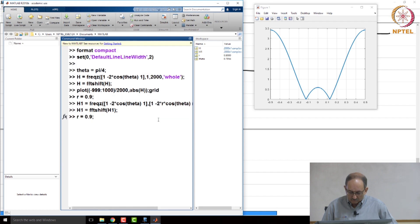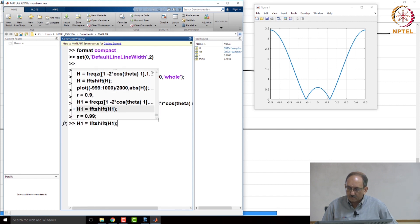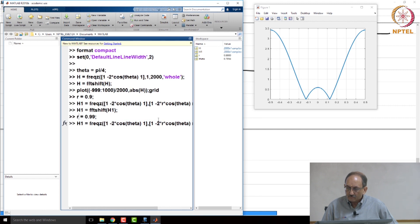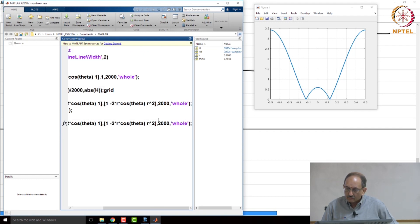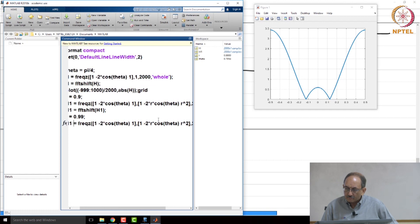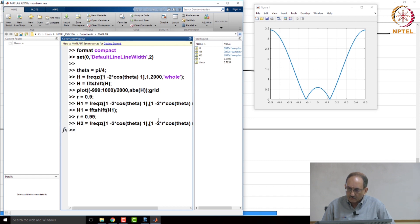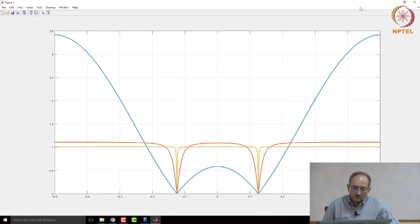Now, let us make this to be 0.99. So, this is h 2 and h 2 is fft shift h 2. So, now, let me plot all three. So, this is what you have already seen. On top of that, I will also plot h 1 and h 2 and remember h 1 is 0.9, h 2 is 0.99.